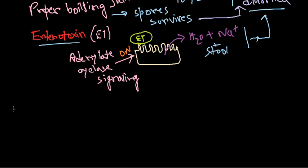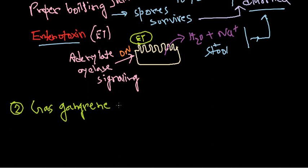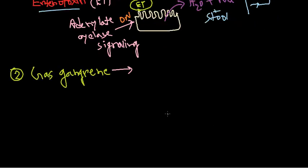Another kind of infection — the most dangerous type — is gas gangrene, and it is also caused by Clostridium perfringens. Gas gangrene is a severe and unique kind of infection. It typically involves a tissue layer that is infected by the Clostridium bacteria through a wound or cut.